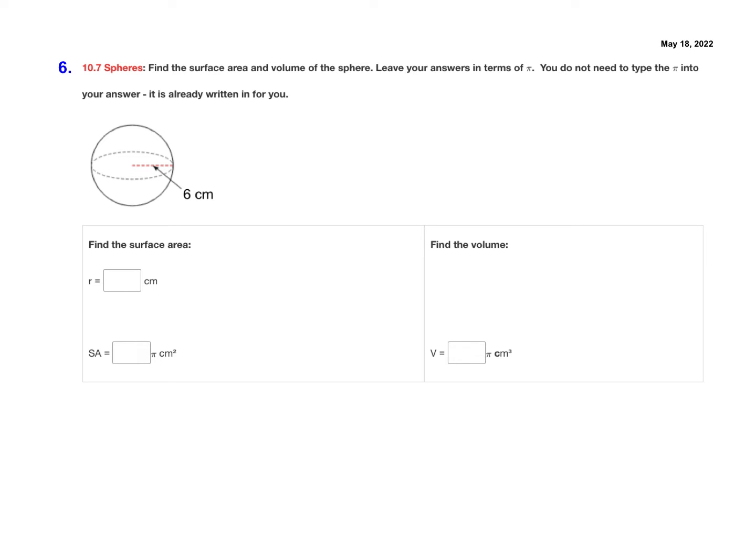The first step of calculating the surface area or the volume of a sphere is to identify the radius. This sphere gives us the radius right now. See how it goes from the center of the sphere to the edge. So the r is just 6 centimeters.